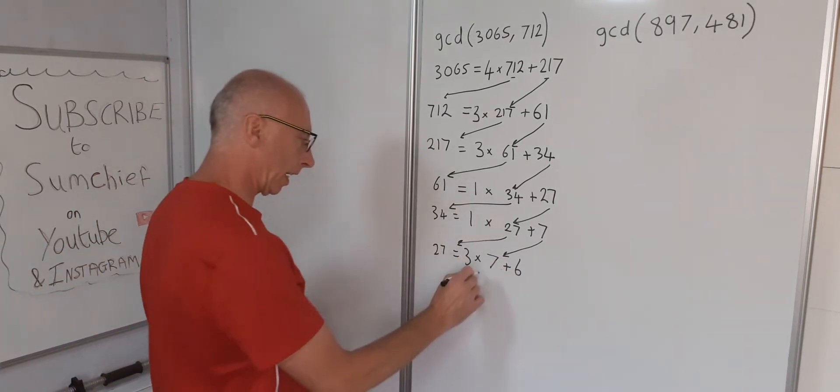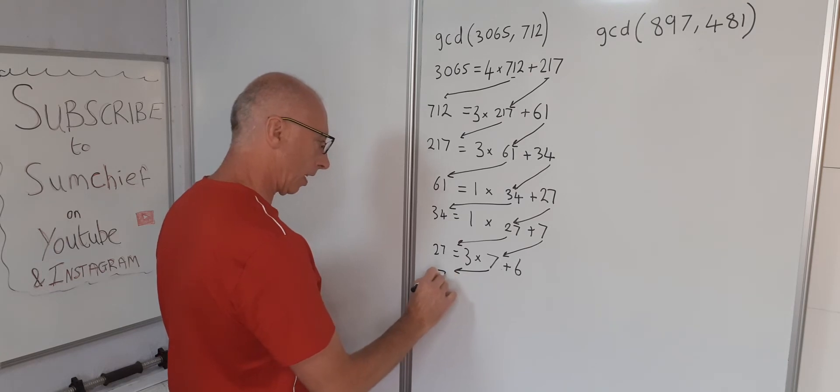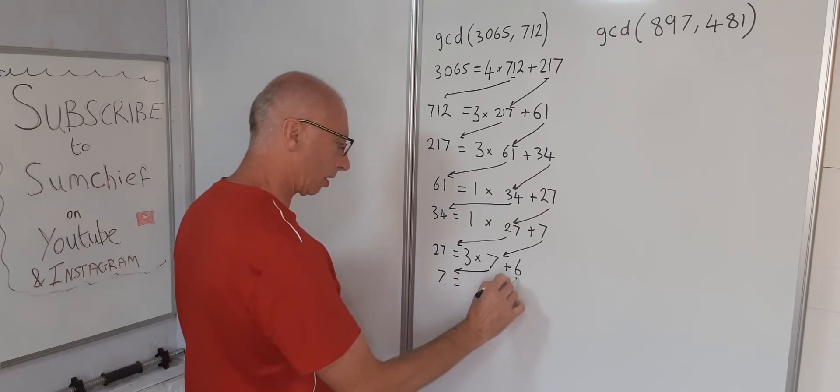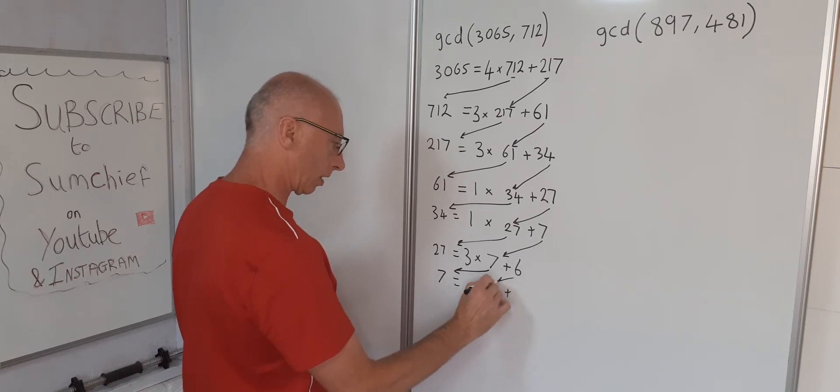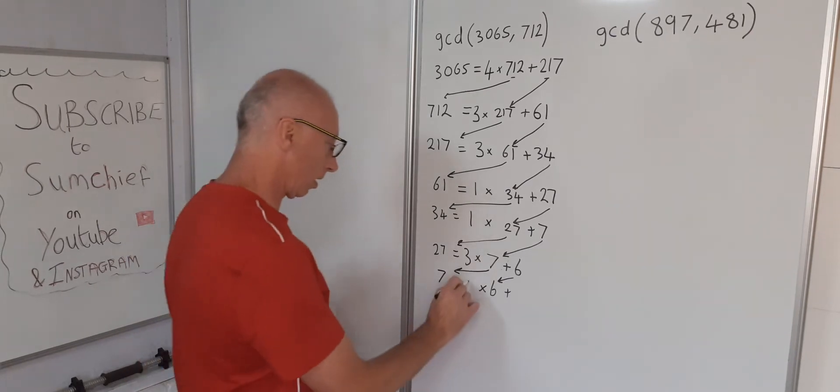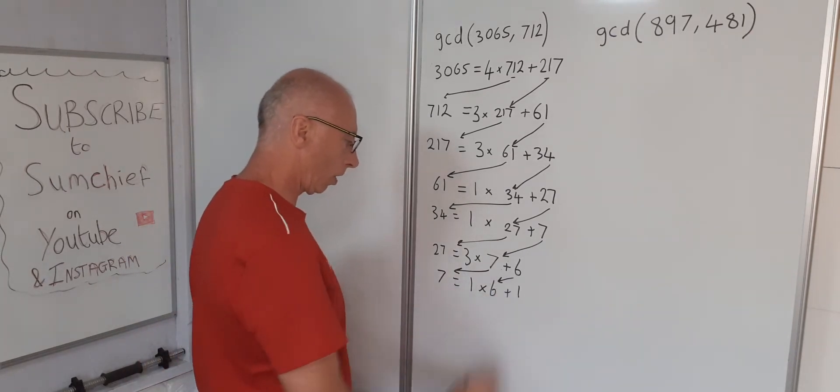And again. 7 equals something times 6. 1 times 6 is 6 with 1 left over.